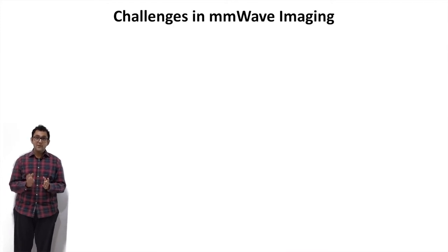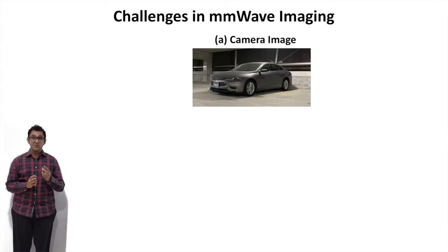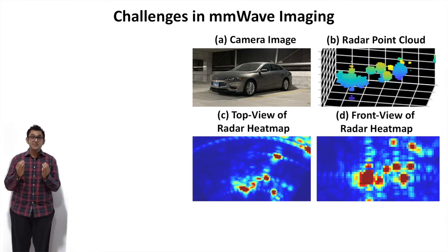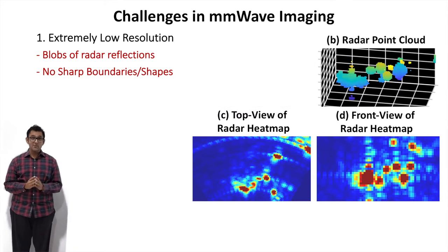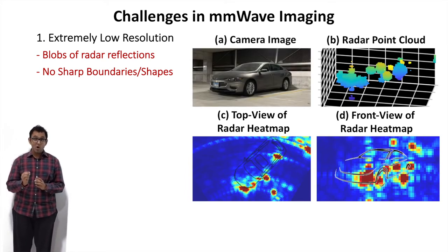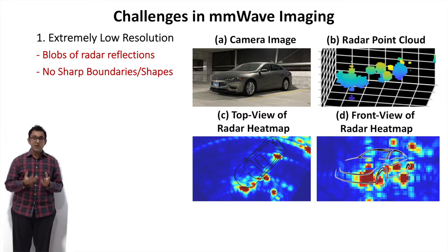Millimeter wave imaging is not easy. Even if you have large phased arrays, the resolution you'd get is still very low. Here is an example from a 3D millimeter wave imaging system that we built — it is possible to get 3D images of the environment, but these radar images are very low resolution and hard to interpret. Given only the radar images, are you able to say what the object being imaged here is? But if we overlay the car on top of this heat map, we can see that yes, this is in fact a car, so there is some information here we can exploit.